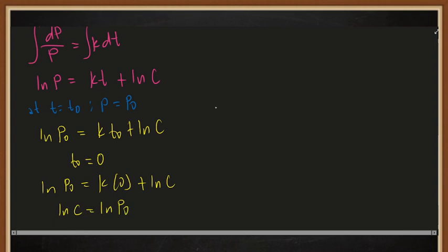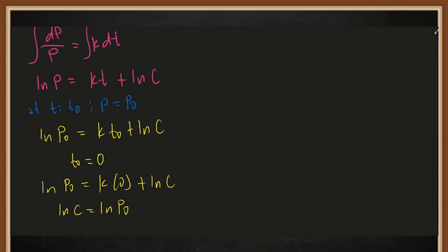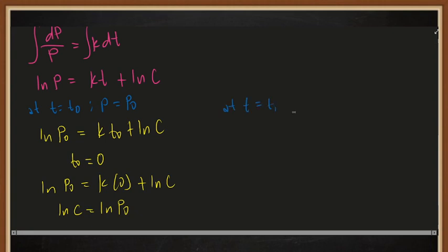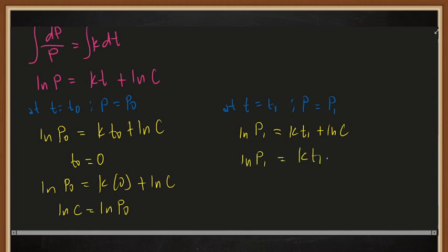To solve for k, we need another initial condition. At t = t₁, p = p₁. Substituting gives ln(p₁) = k·t₁ + ln(c). Replacing ln(c) with ln(p₀), we get ln(p₁) = k·t₁ + ln(p₀). Transferring gives ln(p₁) − ln(p₀) = k·t₁.